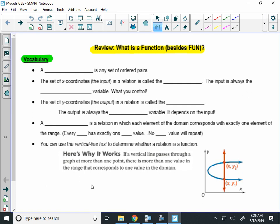So the first blank says a relation is any set of ordered pairs, and every ordered pair has a relationship between the x and y, which is why we call it a relation. The set of the x-coordinates, or the inputs, in that relation is called the domain. The input is always the x-variable. That's what you control in the function.